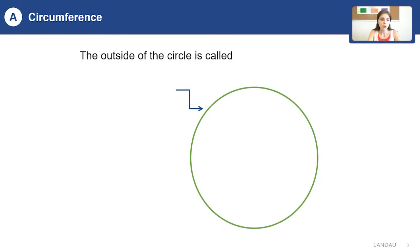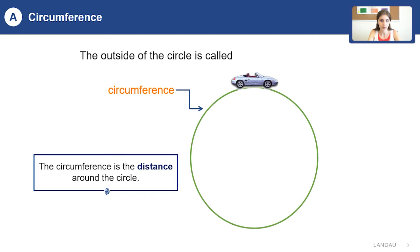Circumference: the outside of the circle is called circumference. The circumference is the distance around the circle.